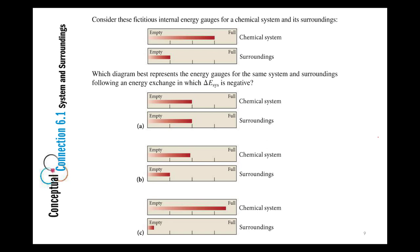All right, so which diagram best represents the after picture if delta E for the system, so change in internal energy for the system, is negative. A, B, or C.